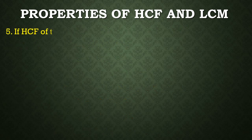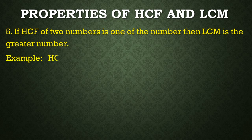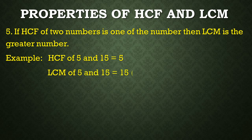Fifth property: If LCM of 2 numbers is 1 of the numbers, then LCM is the greater number. For example, LCM of 5 and 15 is equal to 15, so LCM is equal to 15 and 15 is the greater number.